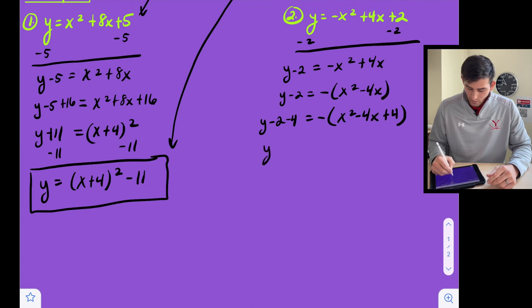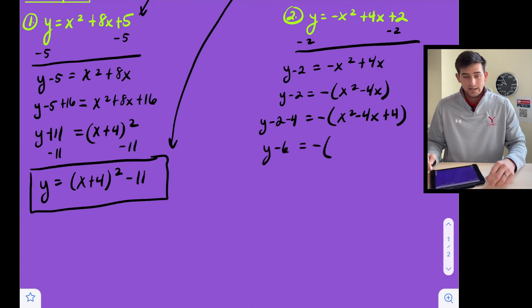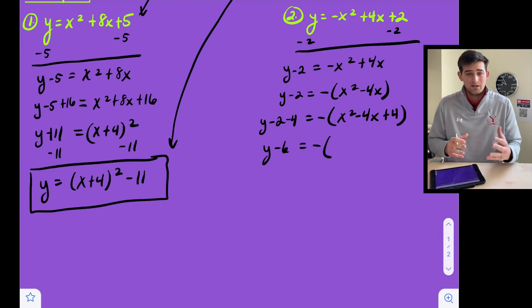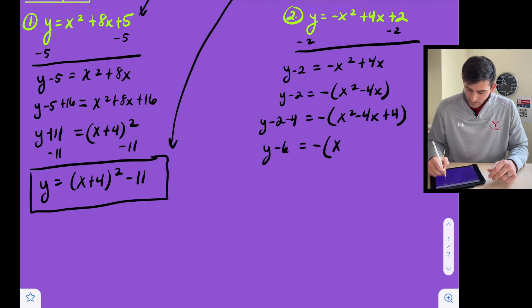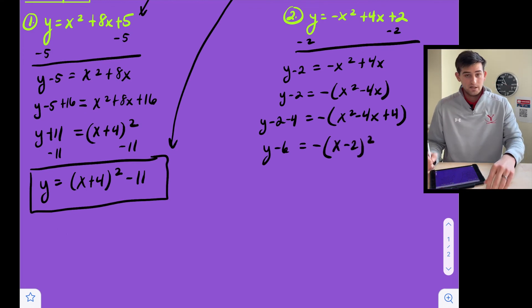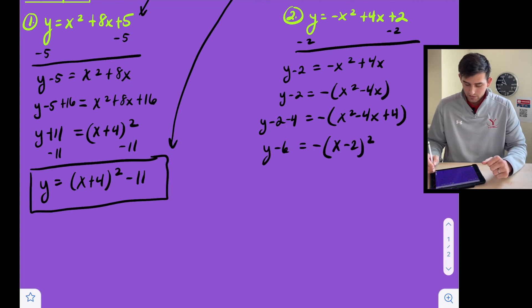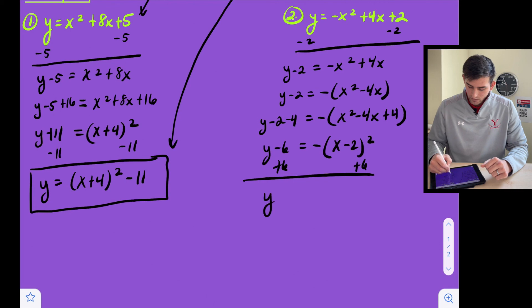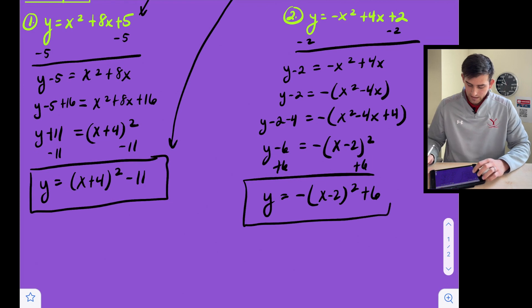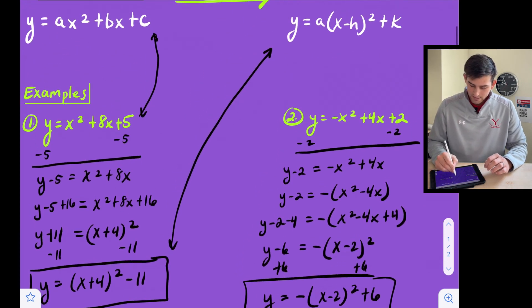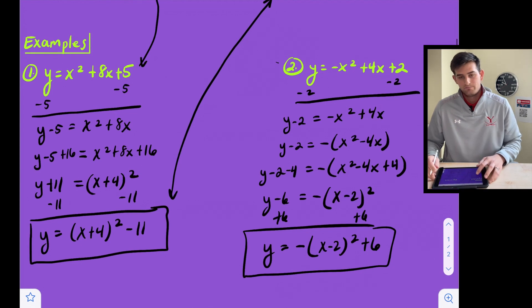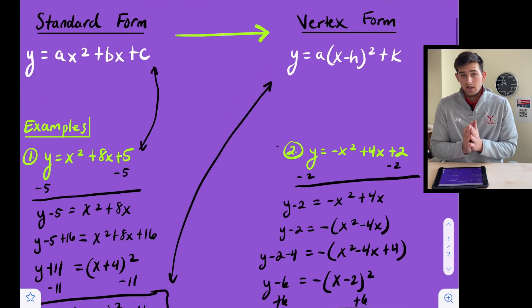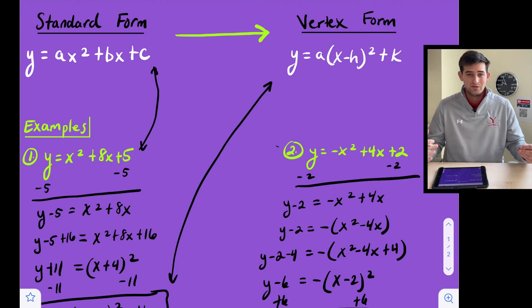Now we can simplify. We have y minus six equals negative, and we factor our perfect square trinomial as the square of a binomial, leaving the negative on the outside: negative times x minus two quantity squared, because b divided by two — negative four divided by two — was negative two. Now we add six to both sides, giving us y equals negative x minus two quantity squared plus six. And now we've taken our standard form and converted it to vertex form. That is how you convert a quadratic equation from standard form to vertex form.